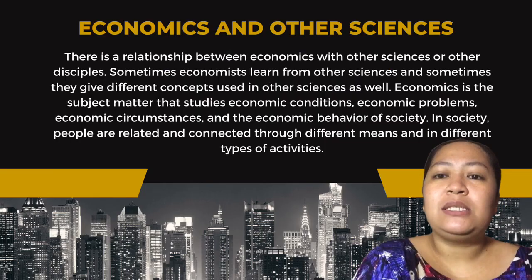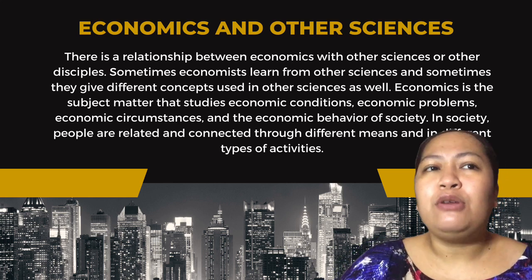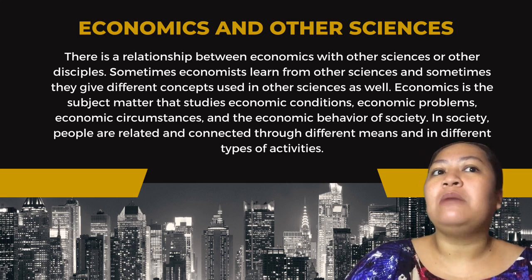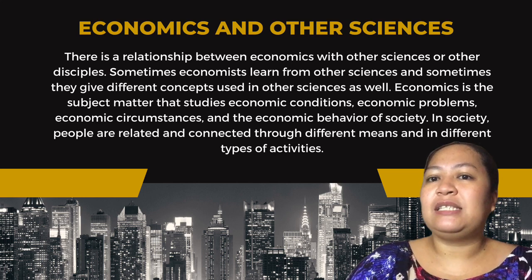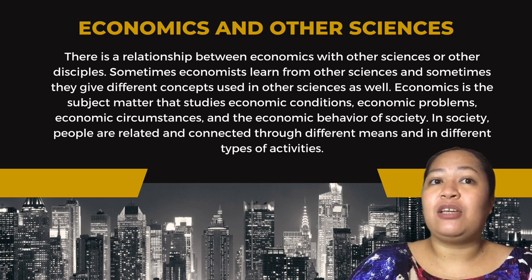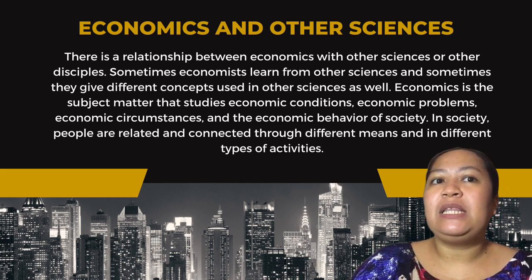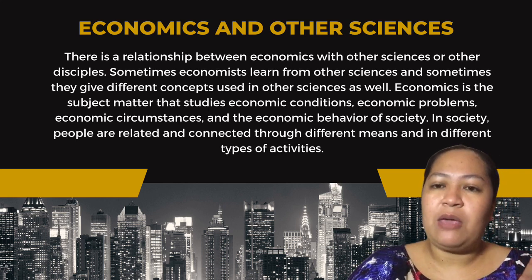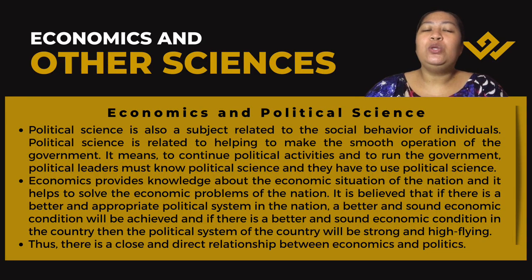Now let us check the relationship between economics and other sciences. There is a relationship between economics and other disciplines because sometimes economics learns from other sciences, and sometimes it gives concepts used in other sciences as well. Economics studies economic conditions, economic problems, economic circumstances, and the economic behavior of society. People in society are connected through different means and types of activity, so economics also partly studies human behavior — that is why it is related to other sciences, especially the social sciences.